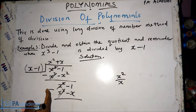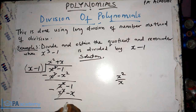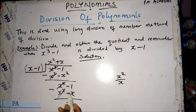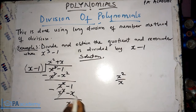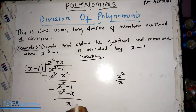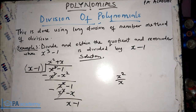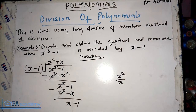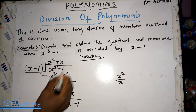After subtraction we're left with: minus minus x gives plus x, written as just x. The constant minus 1 has nothing to subtract from, so it stays as minus 1. Now we can still divide this x by x, which gives us 1.